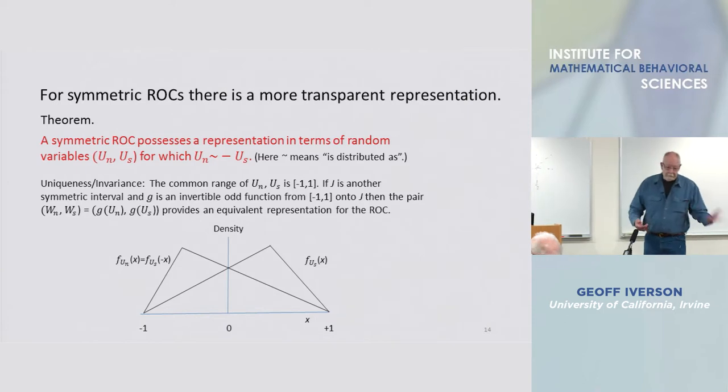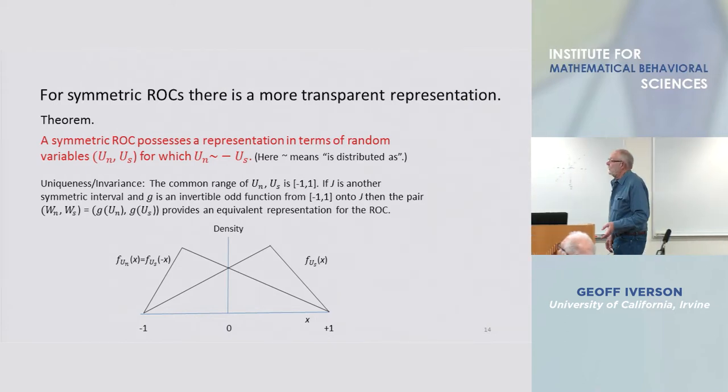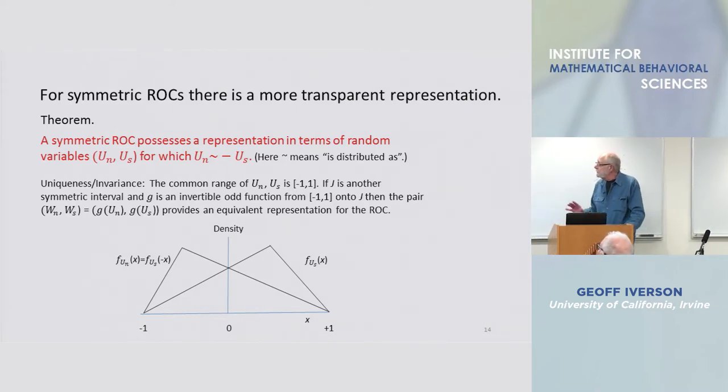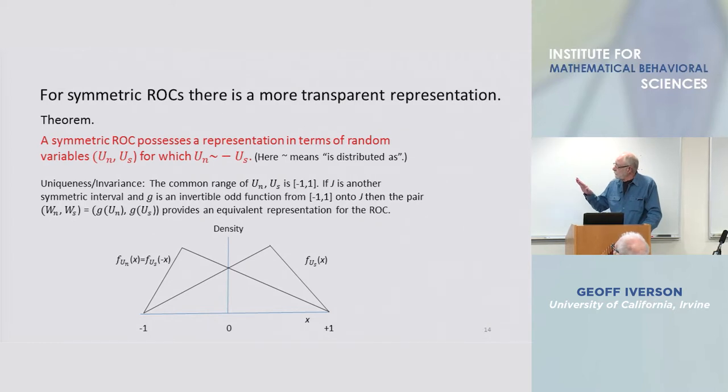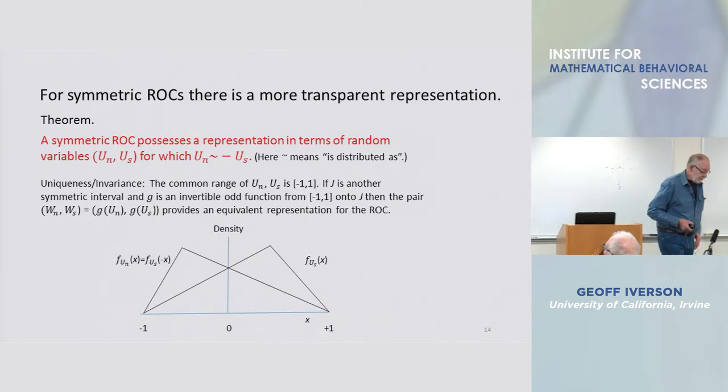And the signal random variable in that representation gives you the noise representation with a minus sign.